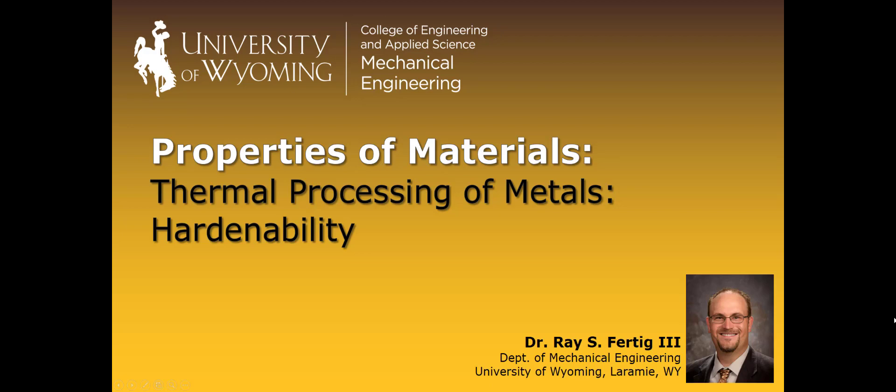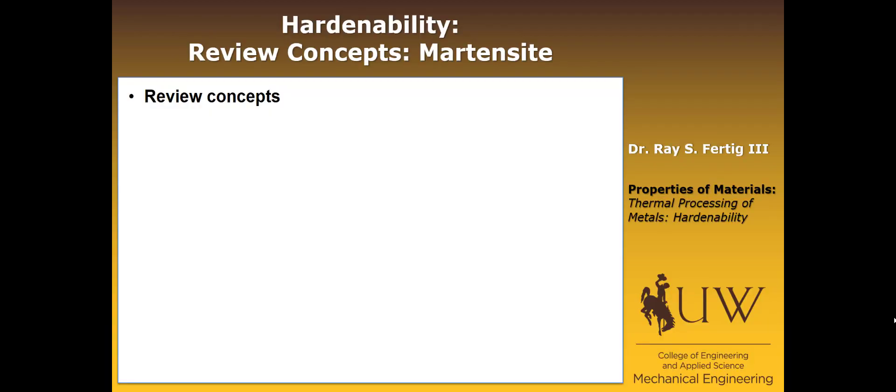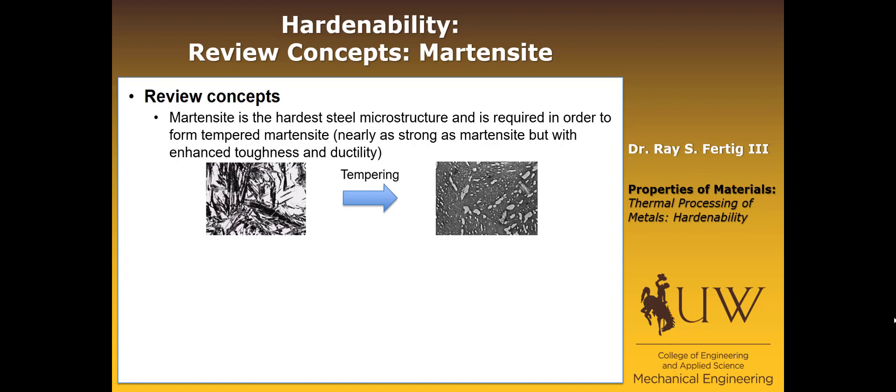We're going to continue on talking about thermal processing of metals. We've talked previously about annealing processes, and now we're going to talk about something called hardenability. Before we launch into defining hardenability, I want to review a few concepts that we talked about when we discussed phase transformations in steel. First review concept: remind you what martensite is. Remember that it's the hardest steel microstructure, and it's required in order to form tempered martensite, which is nearly as strong as martensite, but with enhanced toughness and ductility.